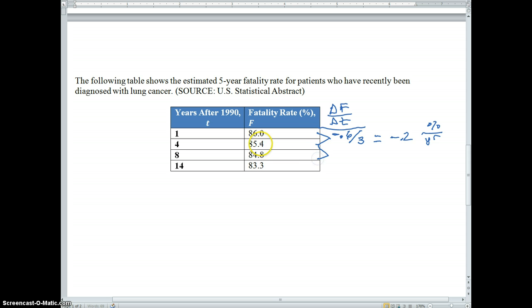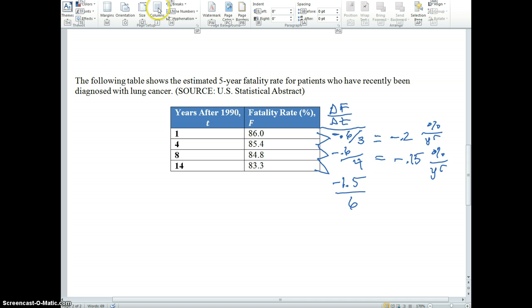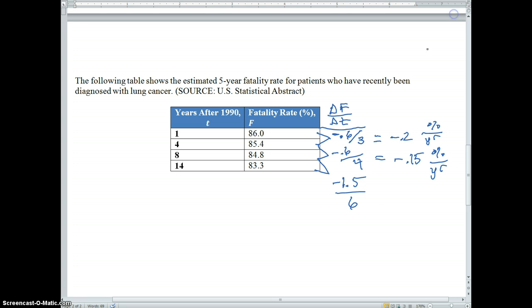But then I look at the next year, and I notice that there's a drop of 0.6, and that appears to be across four years. So, already I know that this is not a constant rate of change. In fact, I get negative 0.15% per year. And then finally, between these two years, I have a drop of 1.5, and that's across six years. That comes out to about negative 0.25% per year.